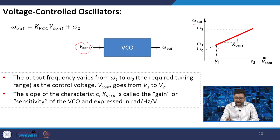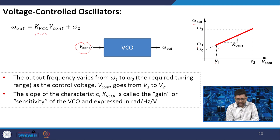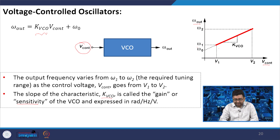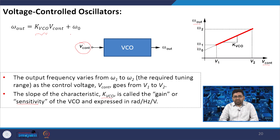We can write omega_out as a function of K_VCO — the slope of the characteristics, or gain of the VCO — also called sensitivity, with units of radians per hertz per volt, since angular frequency omega has units of radians per second. So: omega_out = K_VCO × V_control + omega_naught. This is how we define the VCO in equation form.